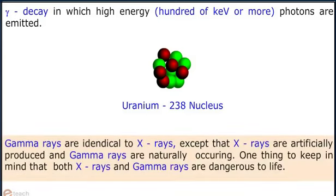Gamma rays are identical to X-rays, except that X-rays are artificially produced and gamma rays are naturally occurring. One thing to keep in mind is that both X-rays and gamma rays are dangerous to life.